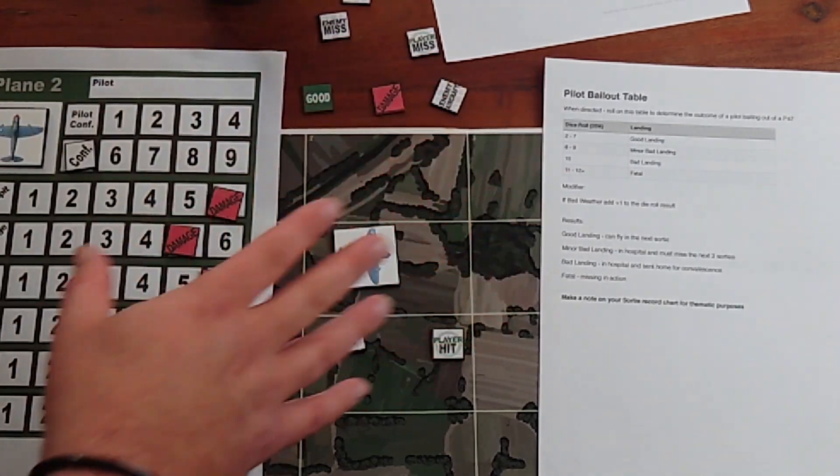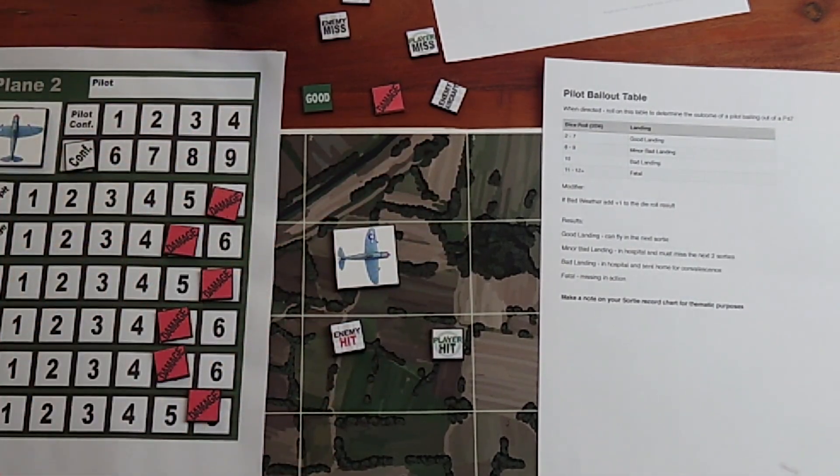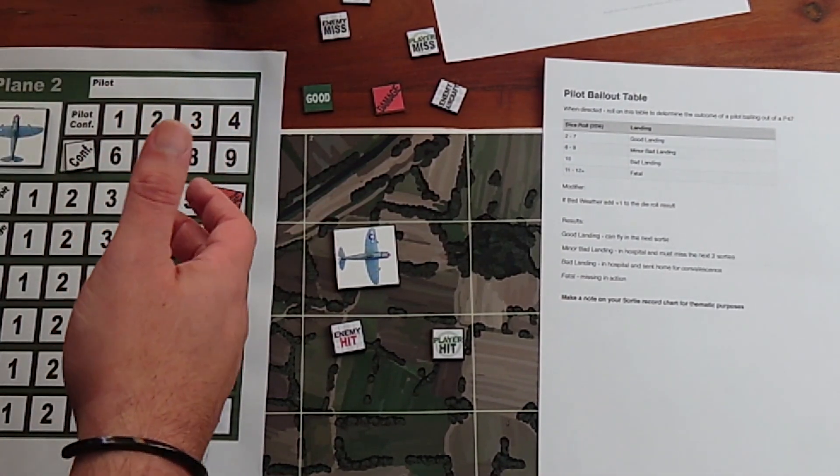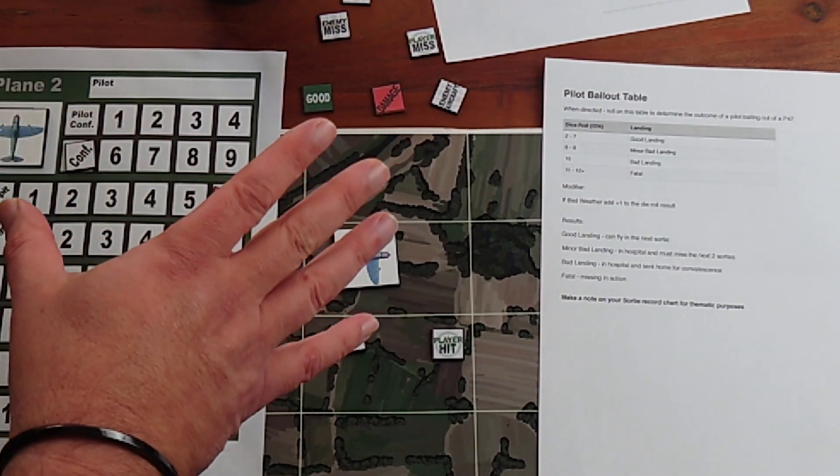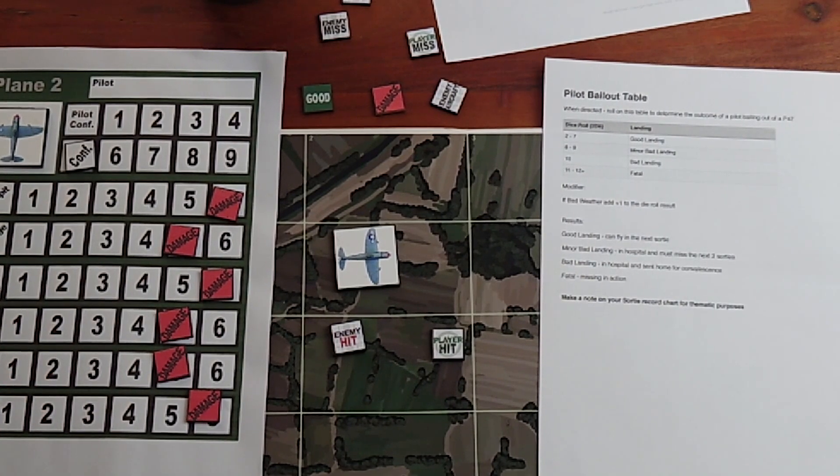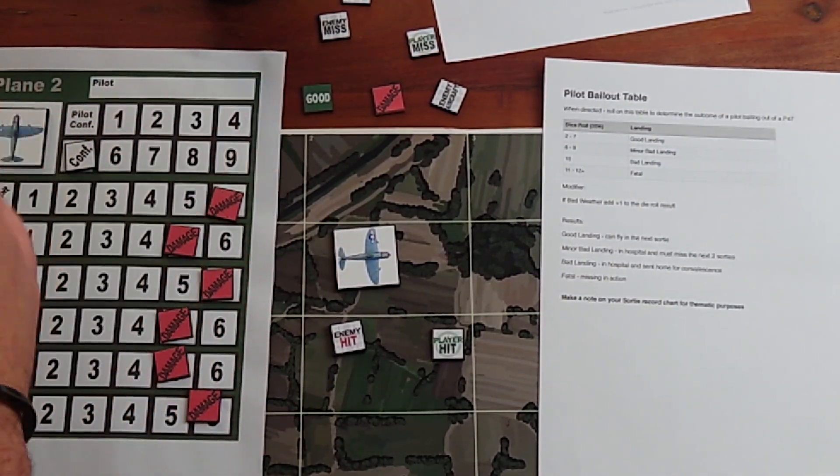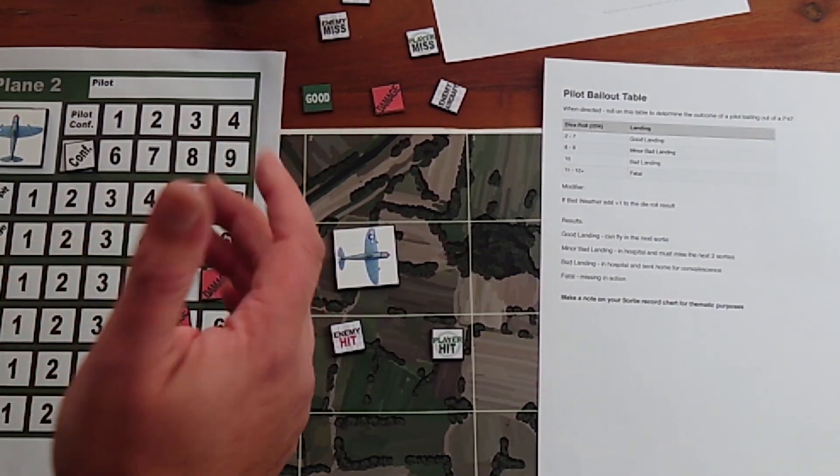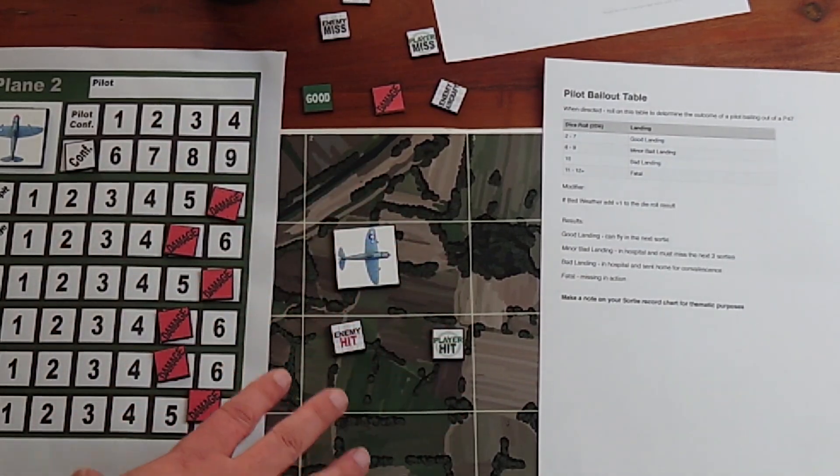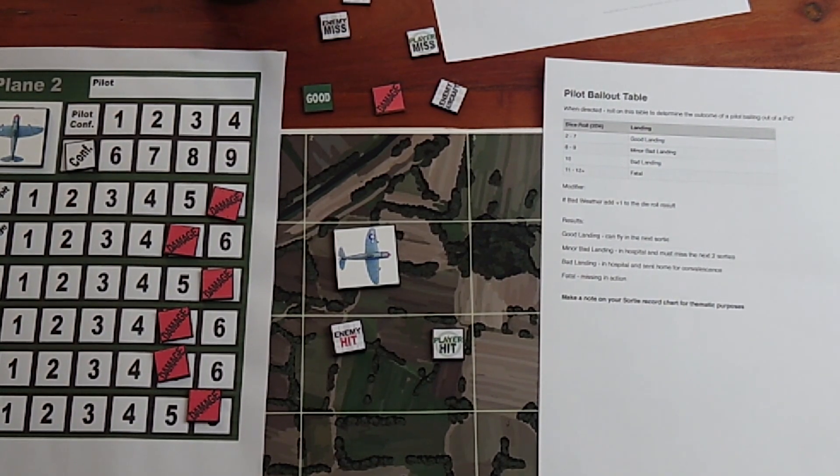Hopefully that gives you some understanding at a high level of how combat is resolved in the game. As you can see, it doesn't take too many tables. I wanted this game to be as streamlined as possible and have that level of uncertainty but also that level of pushing your luck with the pilot confidence. Thanks a lot for watching. As always, any questions about this mechanic or any mechanics for the game, please put something in the comments or contact me on the Kickstarter page. There are other videos for all the core game mechanics in the game, so please check those out. Thanks for watching, thank you.